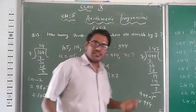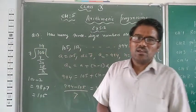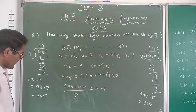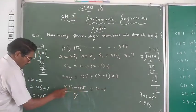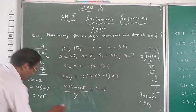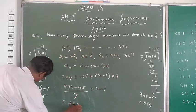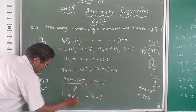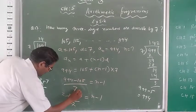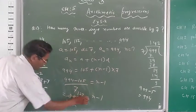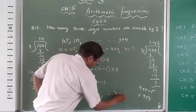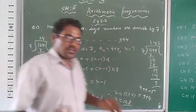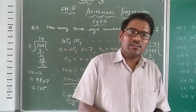994 minus 105 over 7 equals n minus 1. Now 994 minus 105 equals 889 upon 7 equals n minus 1. This number will cancel to give 127. Therefore n equals 127 plus 1, n equals 128. That means 128 numbers of three digits are divisible by 7.